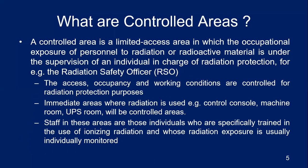To summarize, controlled areas are where radiation personnel work, under the supervision of a radiation safety officer, or areas where radioactive materials are stored. Access, occupancy, and working conditions are all controlled. These include areas immediately adjacent to the radiation facility such as the control console, machine room, and UPS room. Staff in these areas are specifically trained in ionizing radiation use and their radiation exposure is monitored.